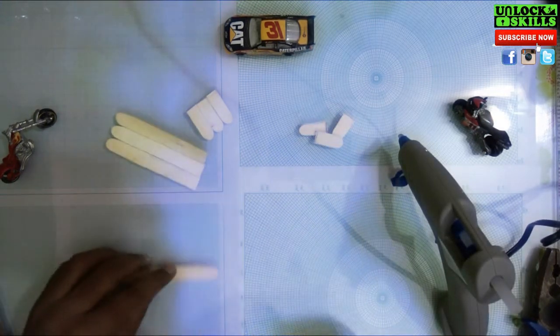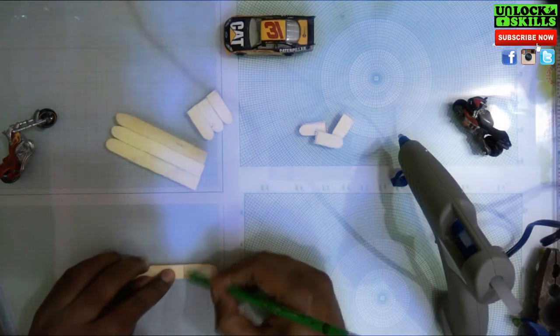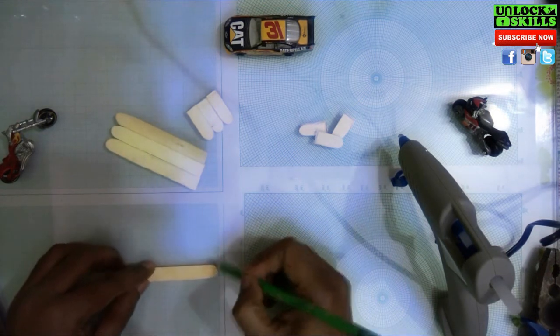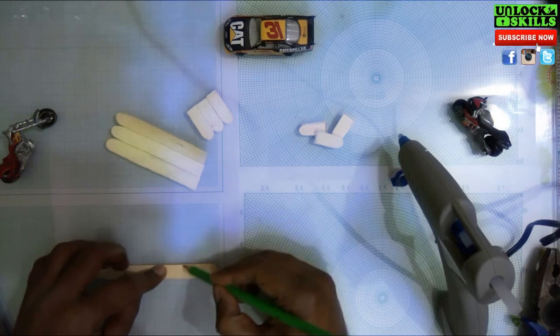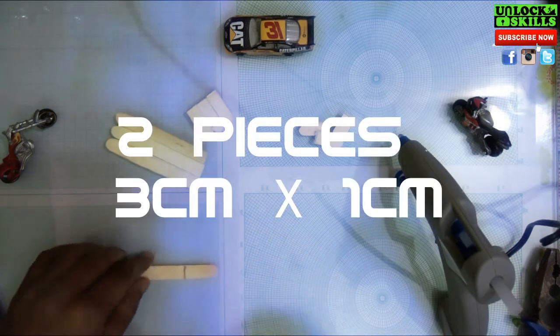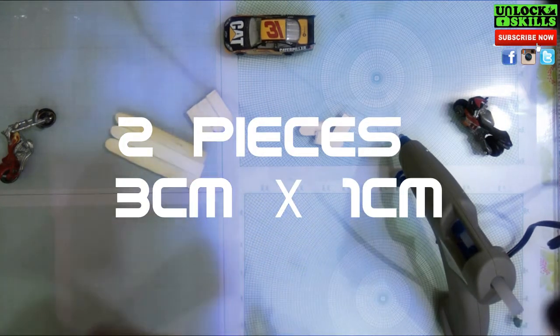Next we would be requiring two more pieces of popsicle sticks which would be three centimeters in length and one centimeter in width. This would be forming as an arm support for this chair model.